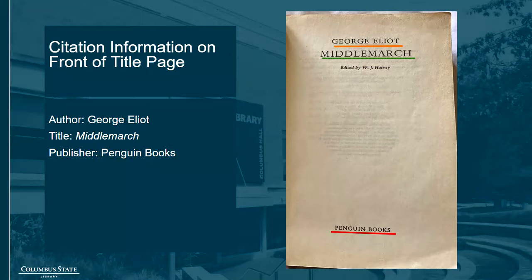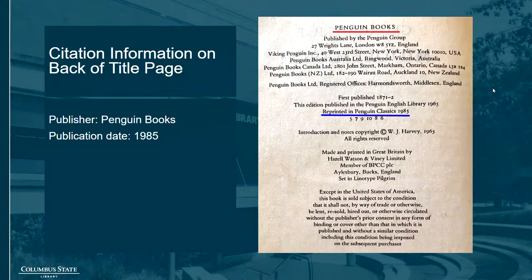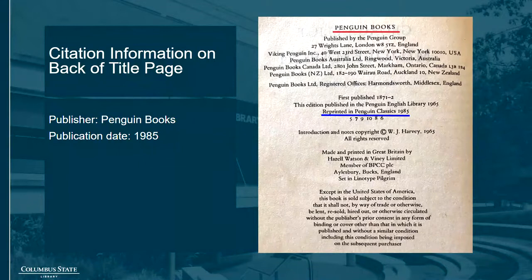Here's an example of how you can find that information in a print book. On the title page, which is usually at the very beginning of the book just before the table of contents, you can find the author's name, the title, and the publisher. Here we have Middlemarch by George Eliot, published by Penguin Books. On the back of the title page, you'll find the publication date. You should cite the date that the particular edition you were using was published, not the original publication date of the text, so look for the most recent date, which here is 1985.